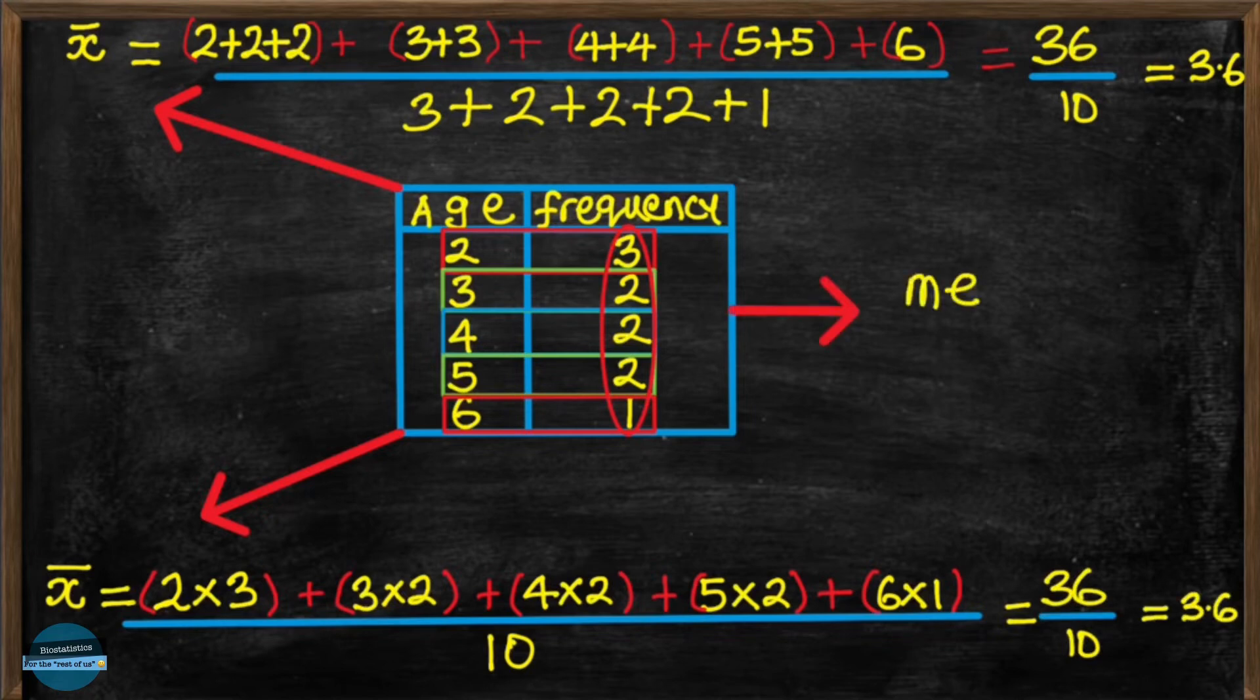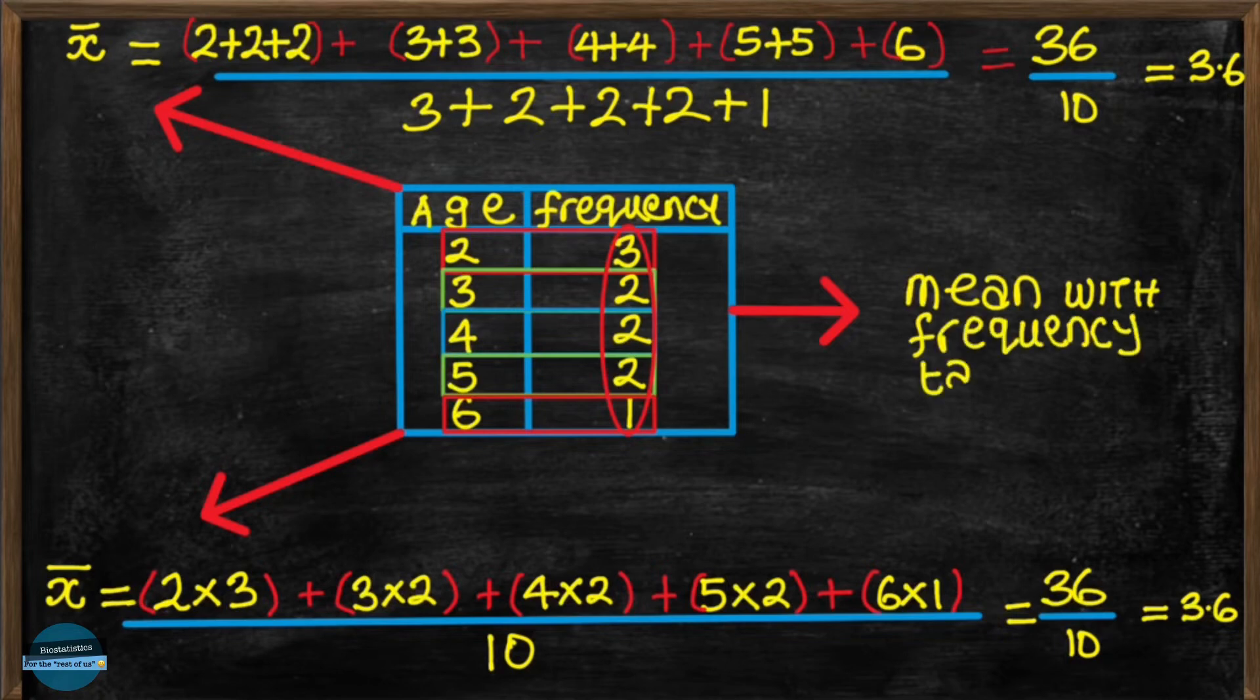Awesome. Alright, so this is how to calculate the mean of data when we have frequency tables. But I'm sure you agree with me that this is still quite clumsy. There's a better way of doing this, and in statistics, we do this using a formula.